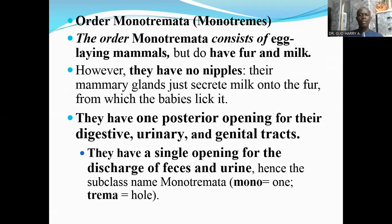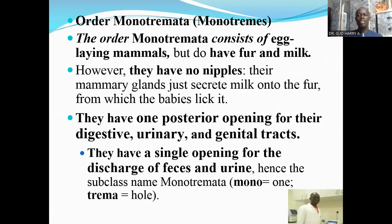These monotremes have one posterior opening for their digestive, urinary, and genital tracts — just one opening. It is the same opening used to discharge feces, to urinate, and for sexual intercourse. Hence, the order is referred to as Monotremata, derived from two words: mono meaning one and trema meaning hole. So they have just a single hole in their posterior end.